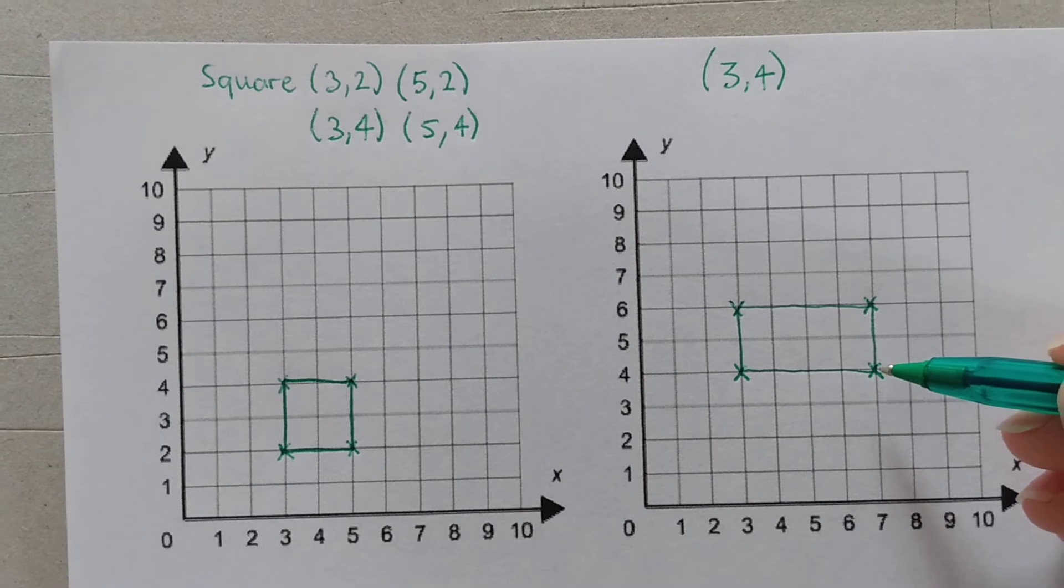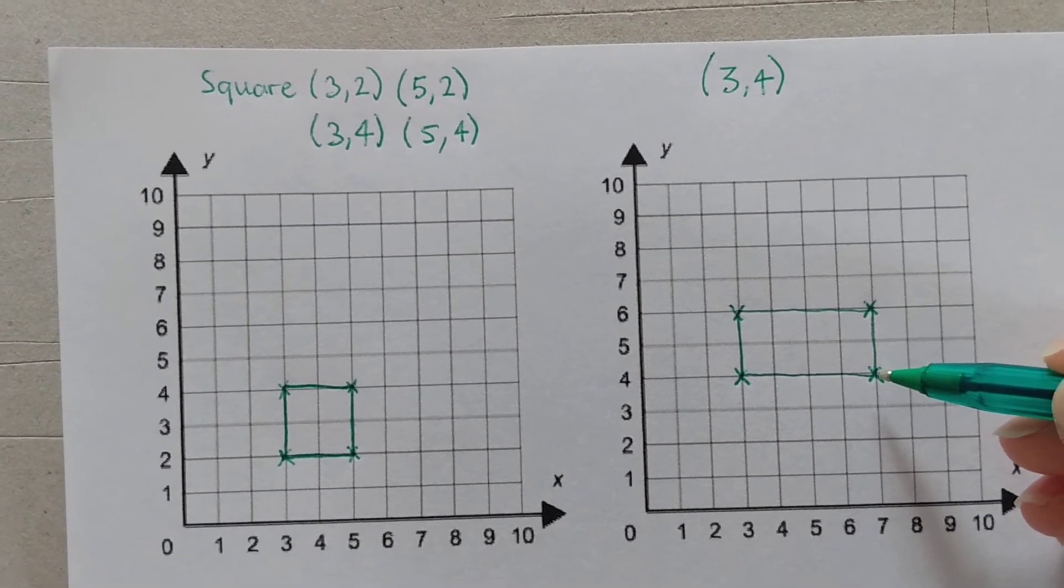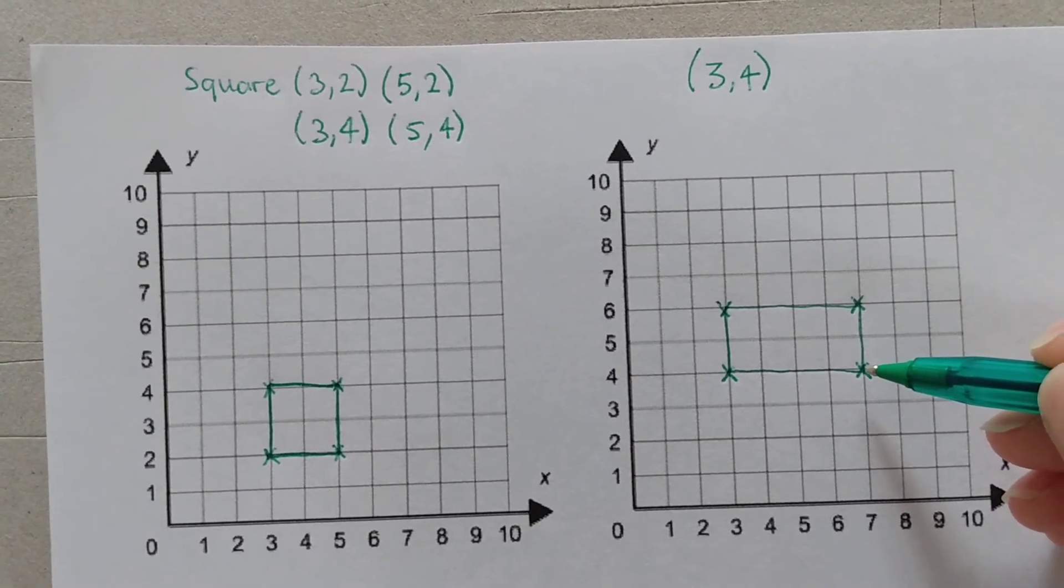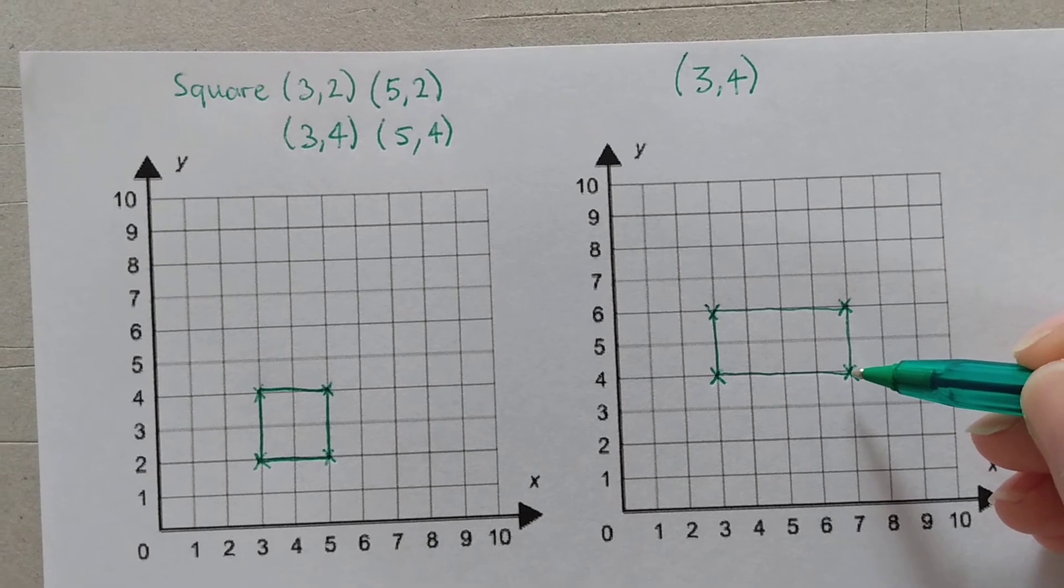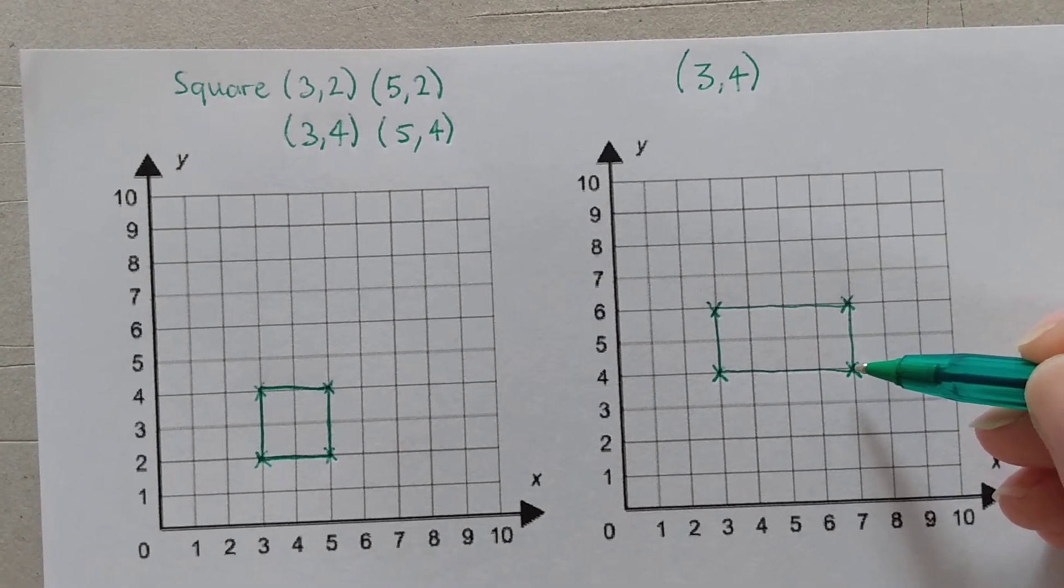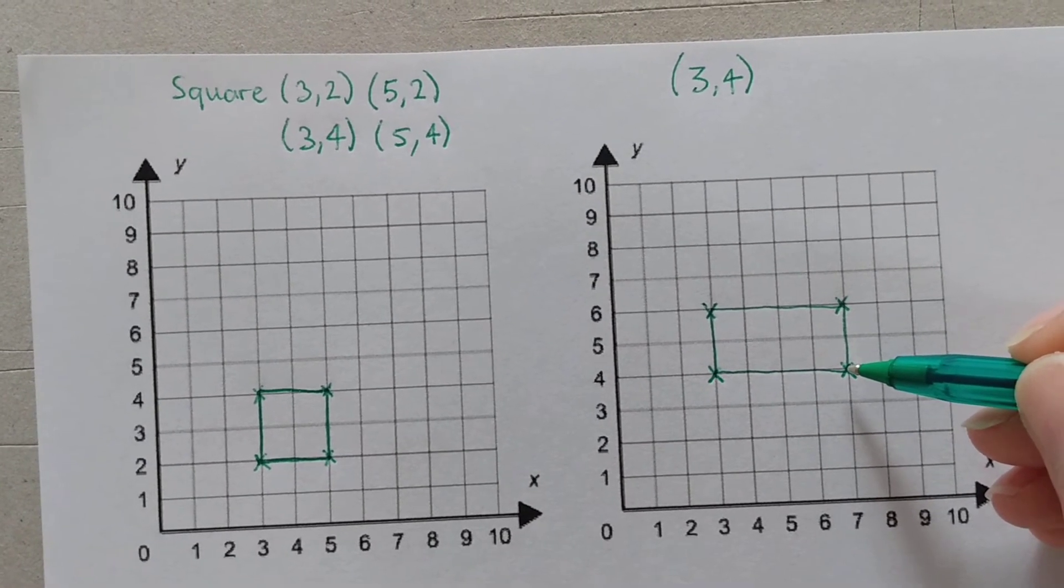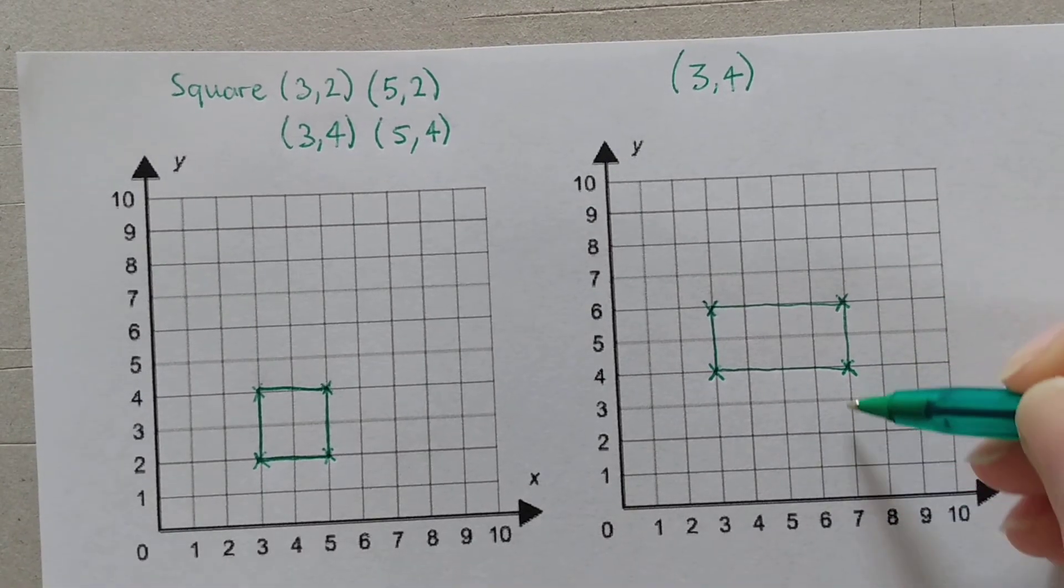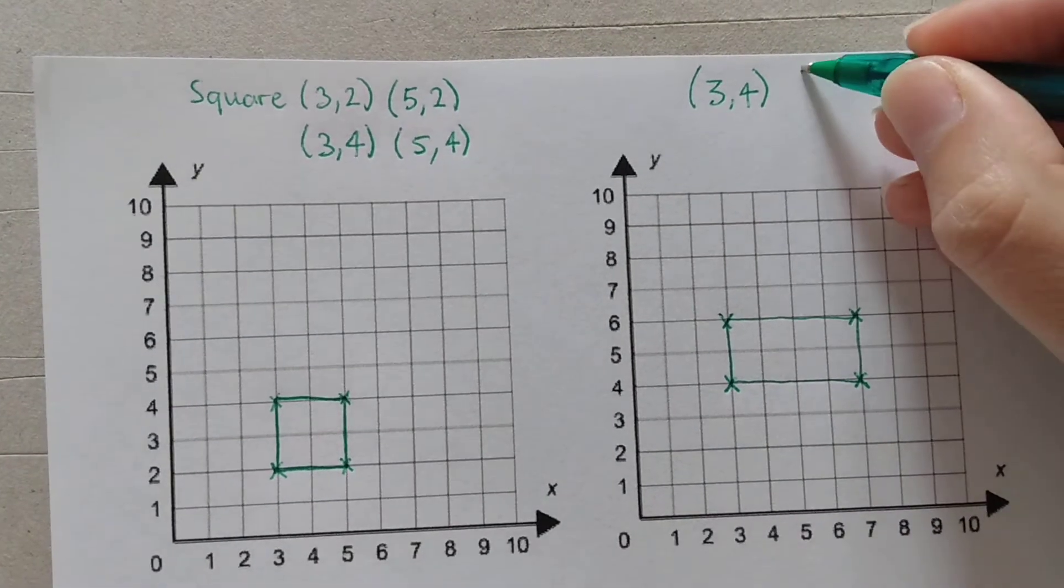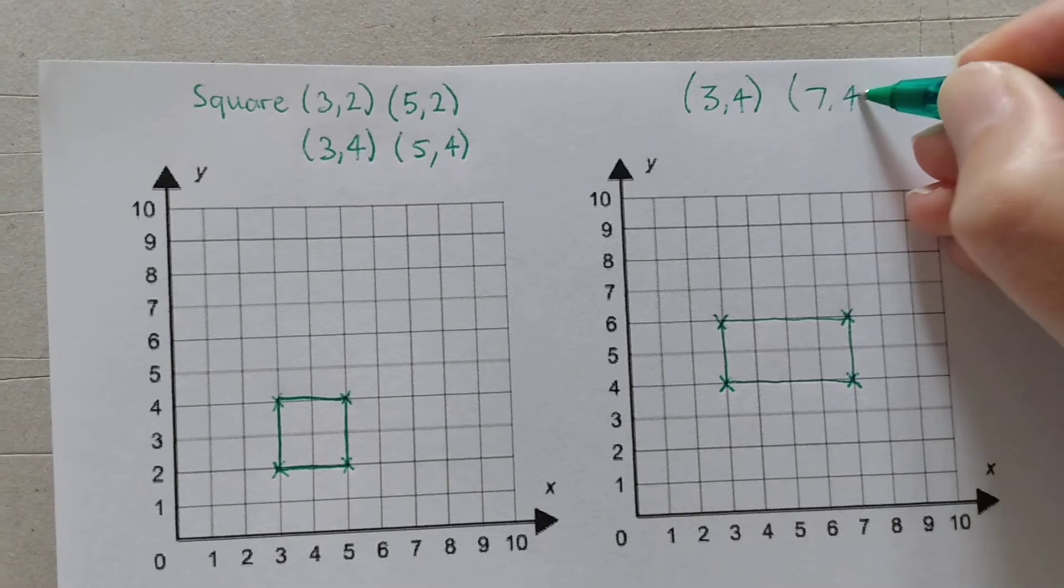What about this one? Oops, someone's shouting out 4, 7. Is that right? I can hear somebody. Well done. It's not 4, 7. It's 7, 4. 7, 4.